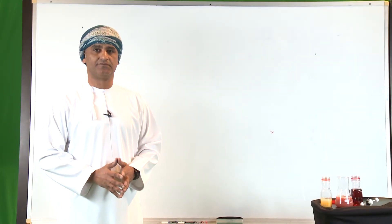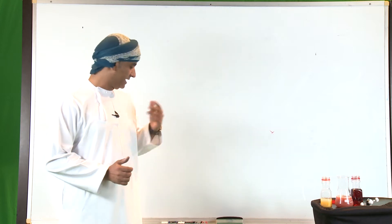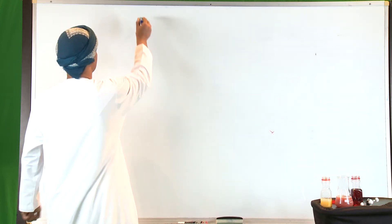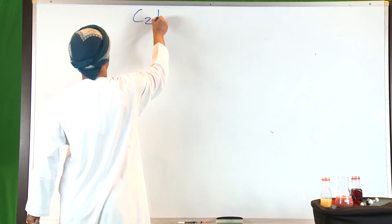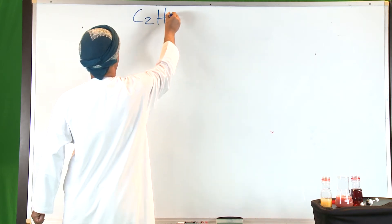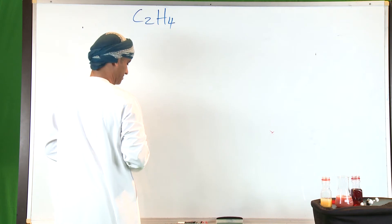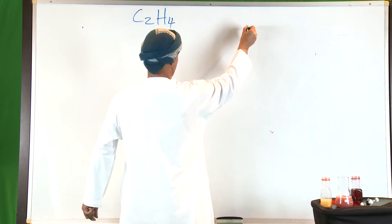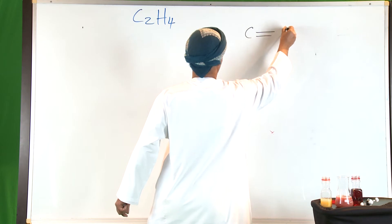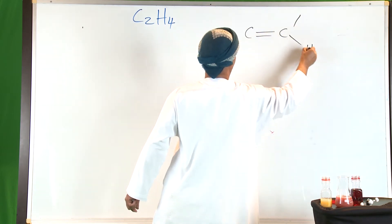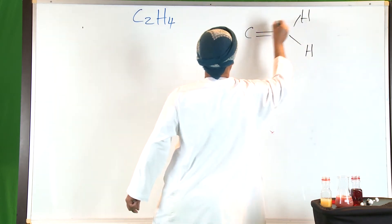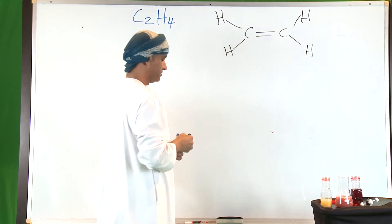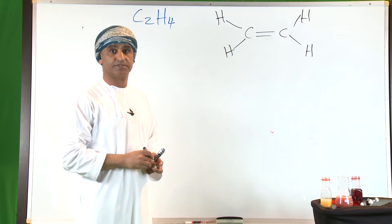Let's continue our discussion of bonding by taking another example of an organic compound — that is ethylene. Ethylene has a formula of C₂H₄. This is a possible structure of ethylene, which is the simplest alkene, where there is a double bond between the two carbon atoms.